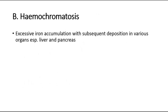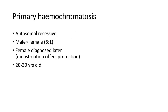Moving on to the next metabolic disease, which is haemochromatosis. In haemochromatosis, there is excessive iron accumulation with subsequent deposition of iron in various organs, especially in the liver and pancreas. Besides liver and pancreas, there are also other organs that can be deposited with iron as well, which will be discussed later. There are two types: primary and secondary haemochromatosis.